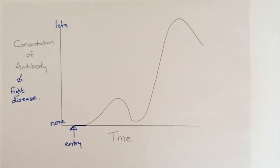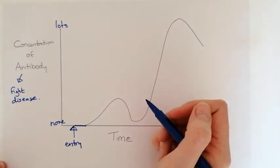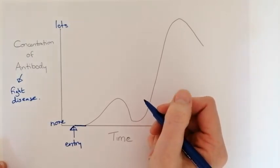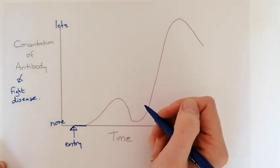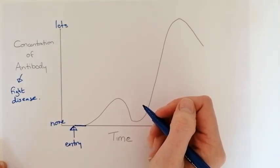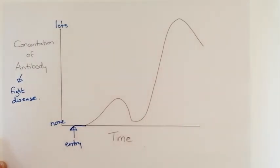In this little bit of a gap what is going on is called clonal expansion. Basically the white blood cells that are going to be making your antibodies, the B cells, those white blood cells are going through the process of mitosis. They are copying themselves.